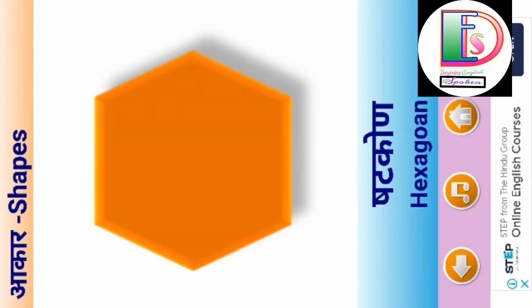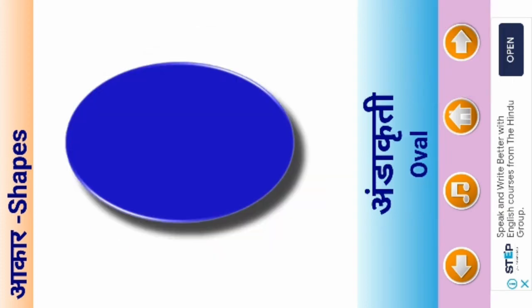H.E.X.A.G.O.A.N. Hexagon means Setcon. O.V.A.L. O.H.L. means Underkriti.